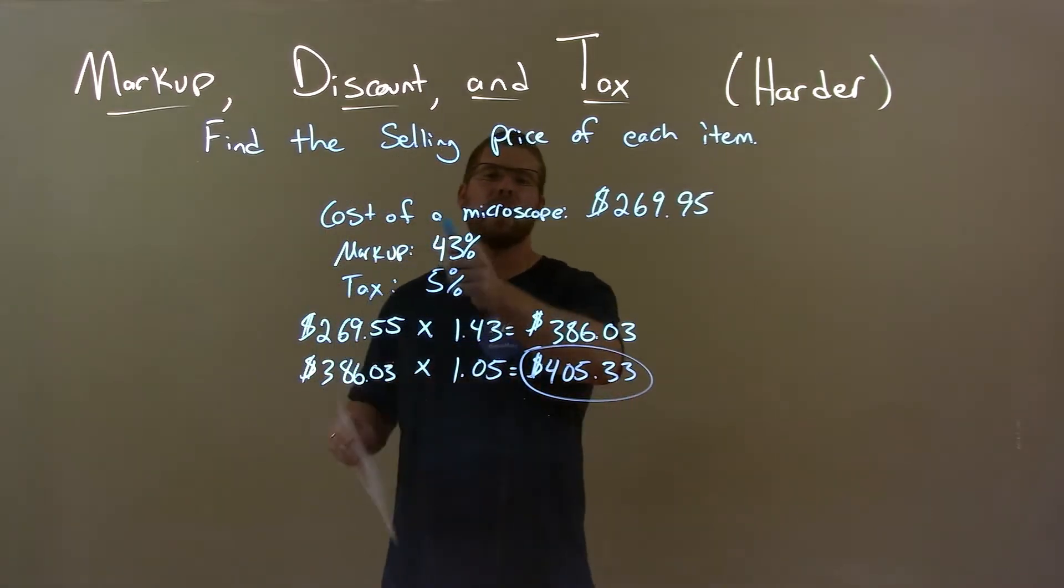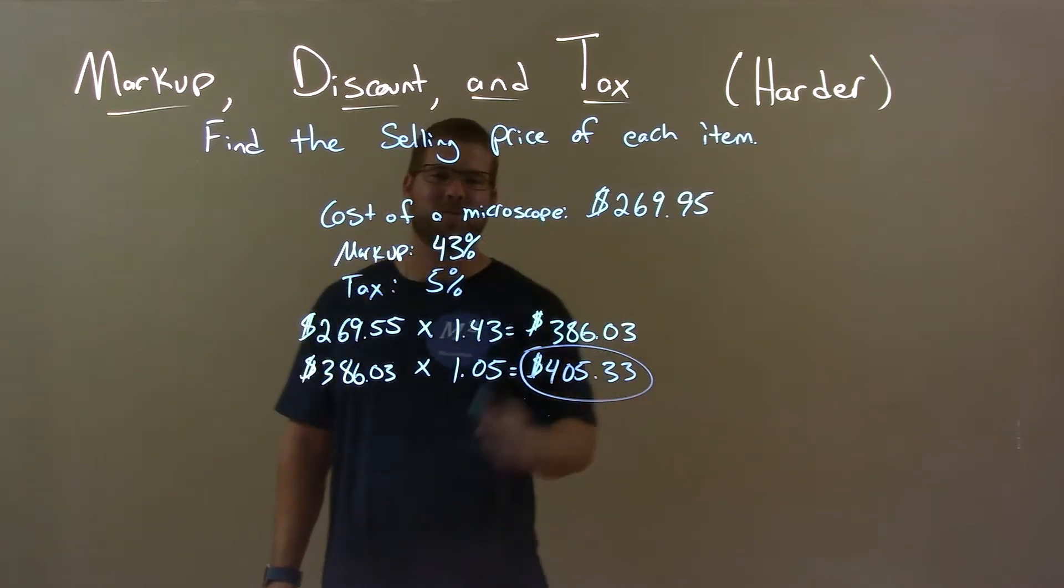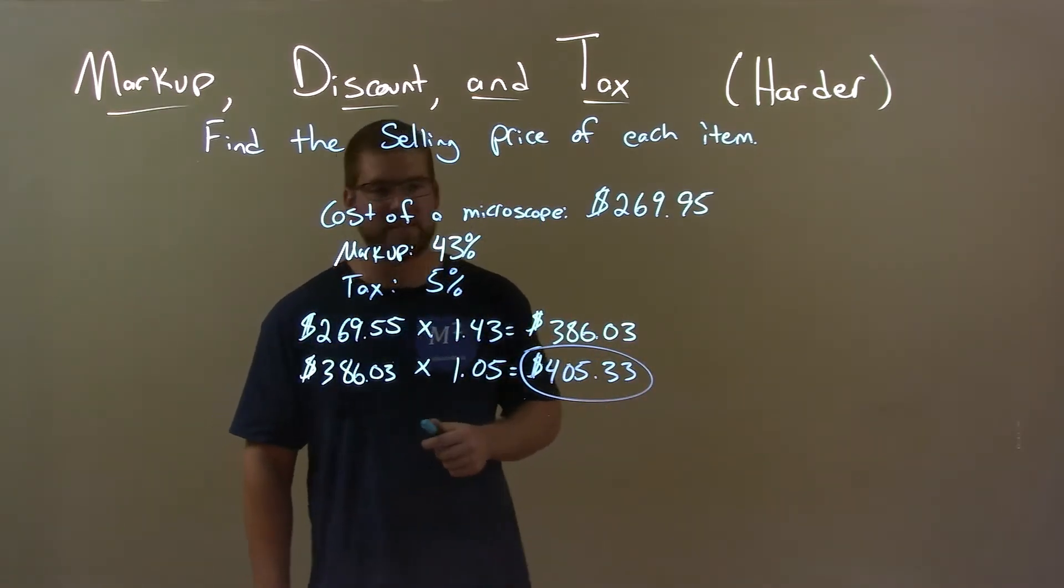Quick recap. Given the cost of the microscope is $269.95, markup is 43%, and tax is 5%.